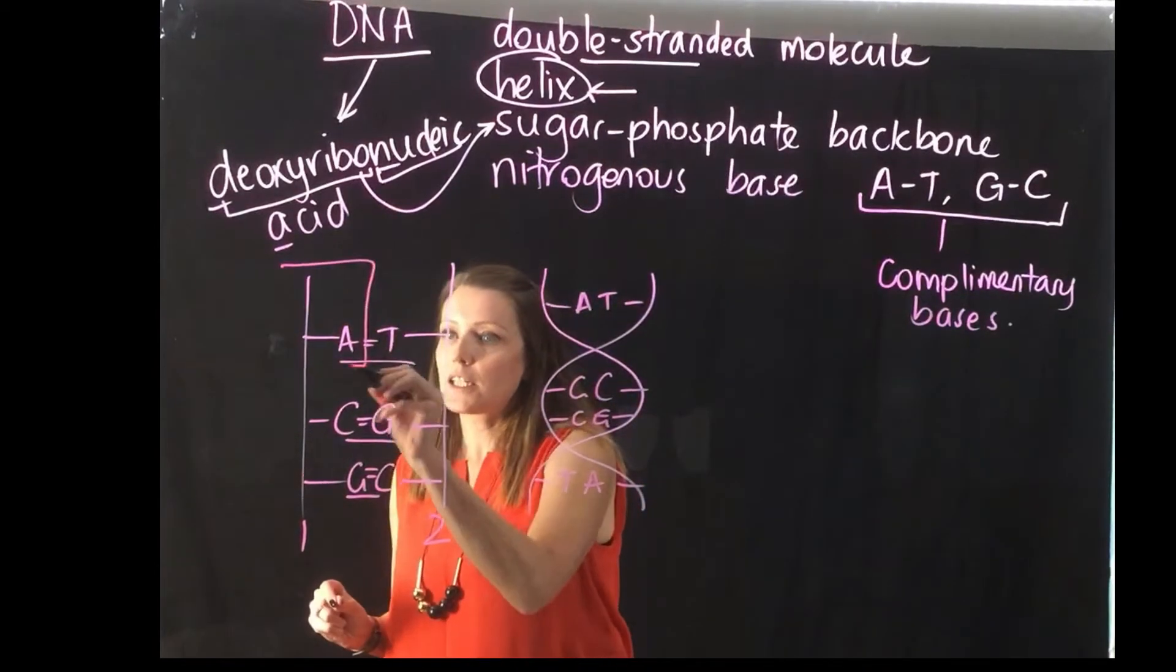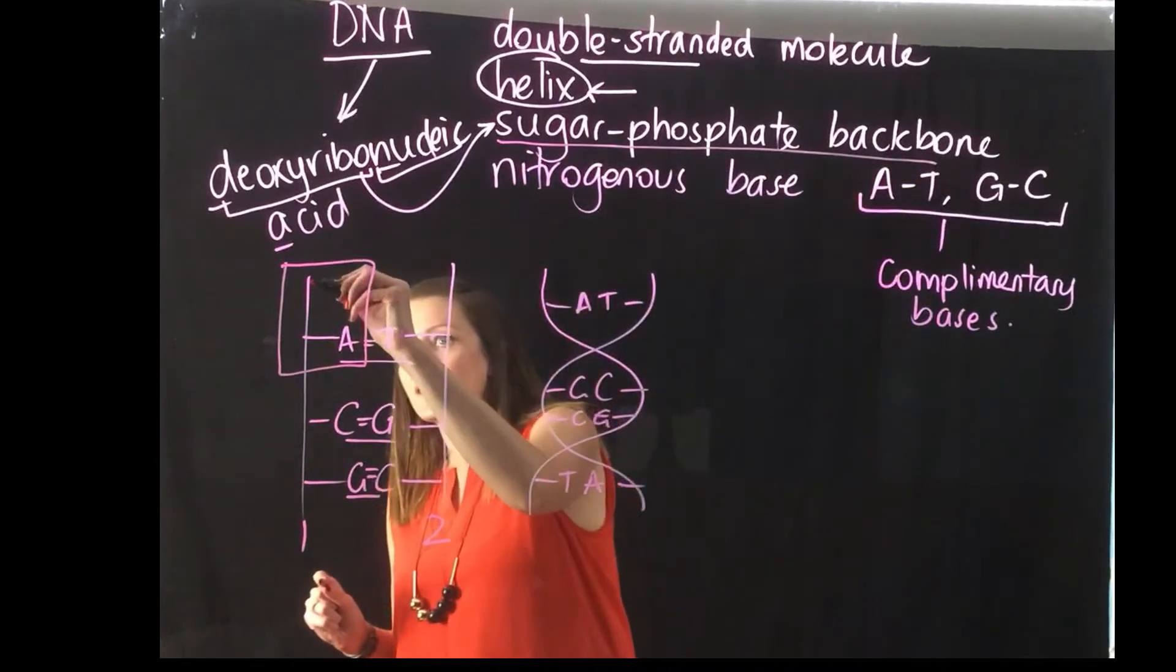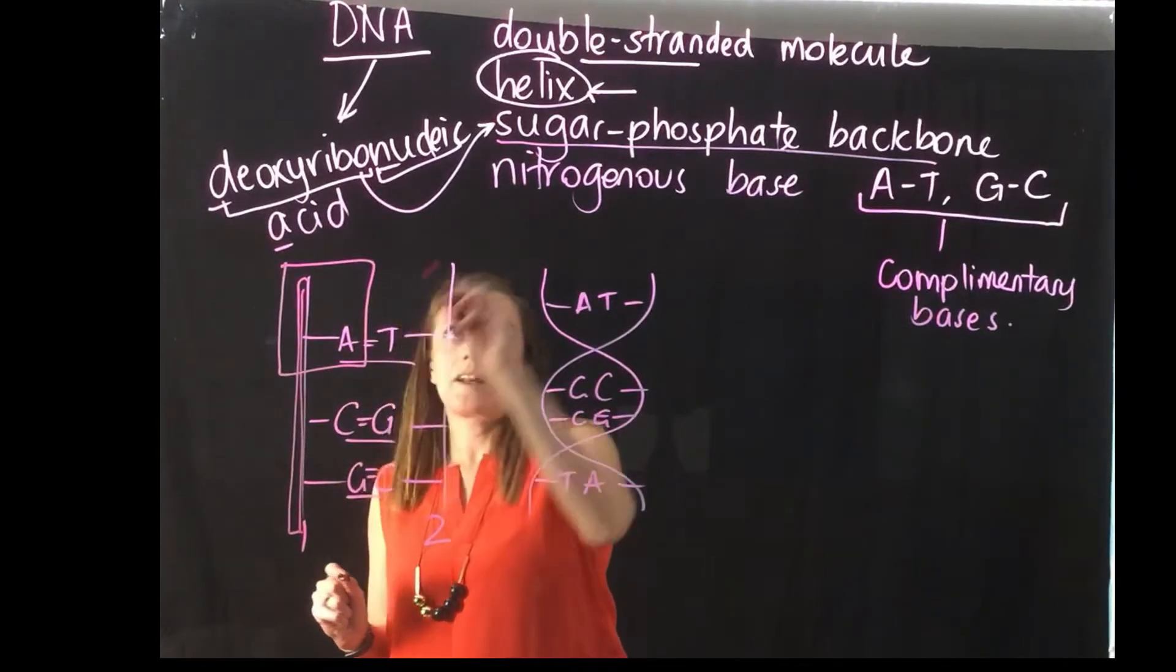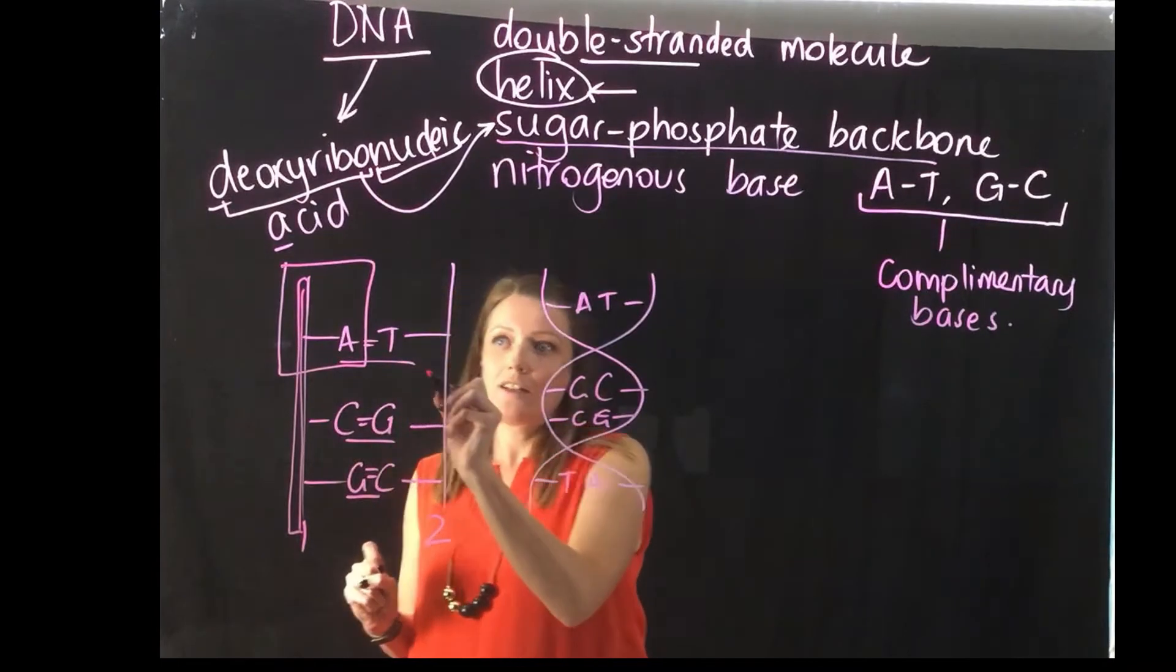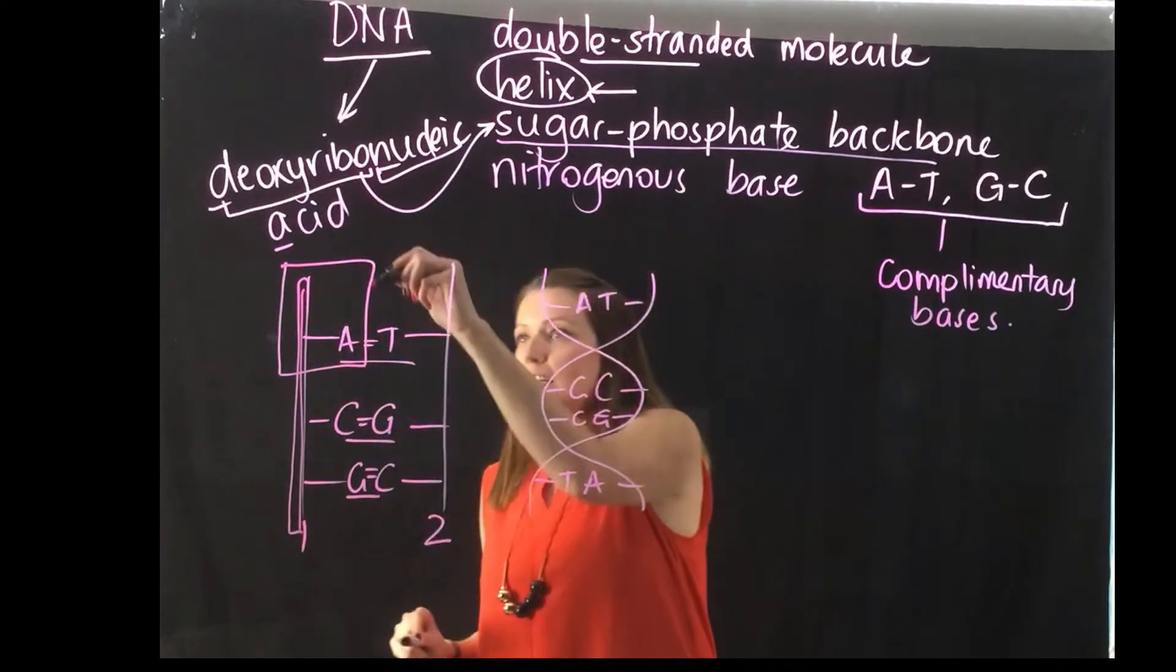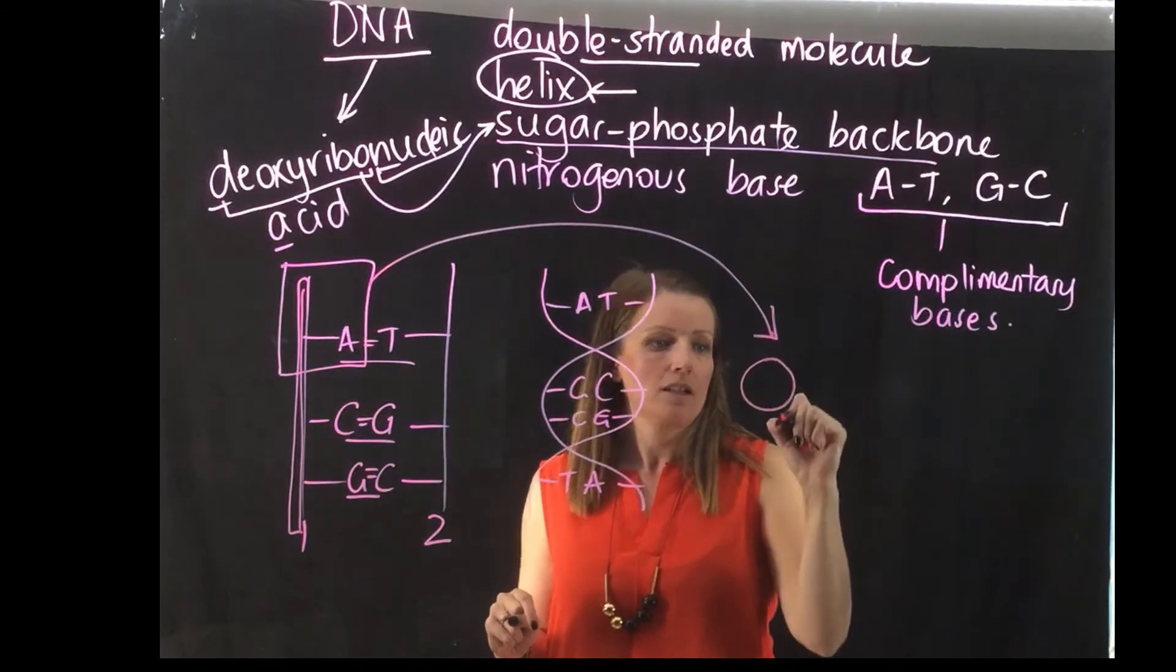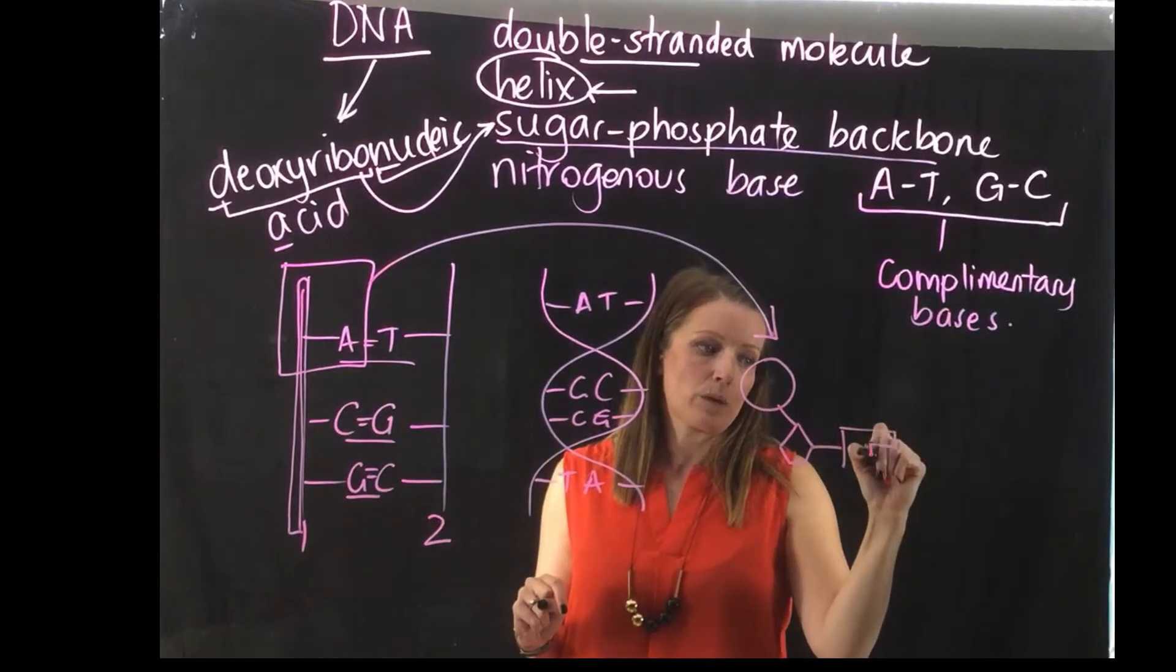If we were to have a look at this section here, we know that it's got a sugar-phosphate backbone, which is this part here. The backbone, just like a ladder, the sides of our ladder are made up of our sugar and our phosphates, and then the steps of our ladder is made up of our bases.